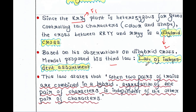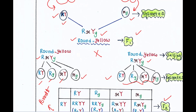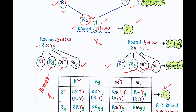Based on his observations from the dihybrid cross experiment, Mendel proposed his third law. In our last lecture we talked about the first and second laws; in this lecture we discuss the third law, called the Law of Independent Assortment. This law states that when two pairs of traits are combined in a hybrid, segregation of one pair of characters is independent of the other pair of characters.